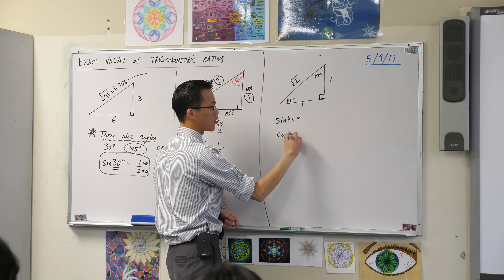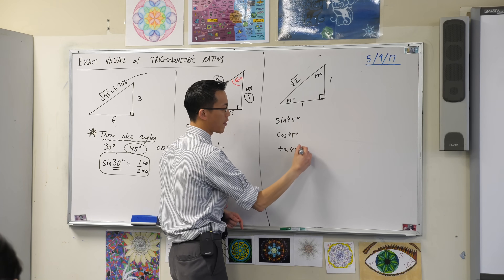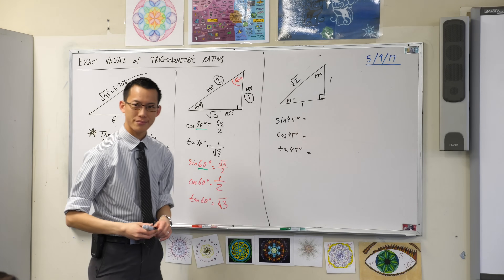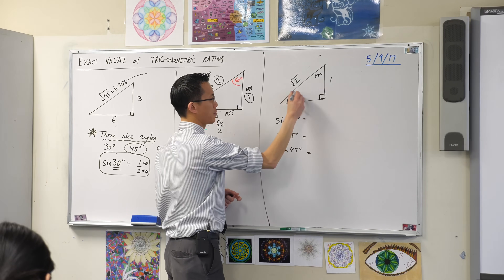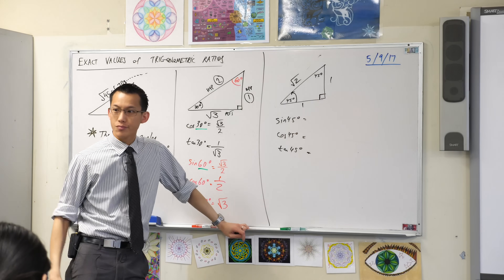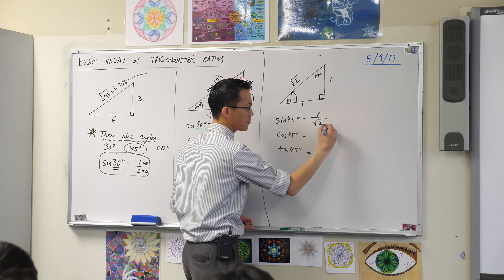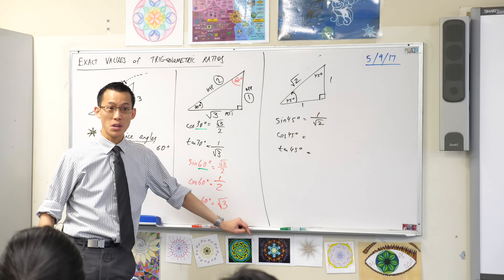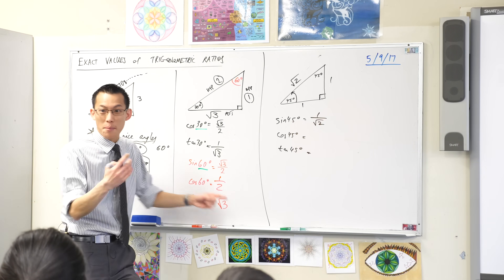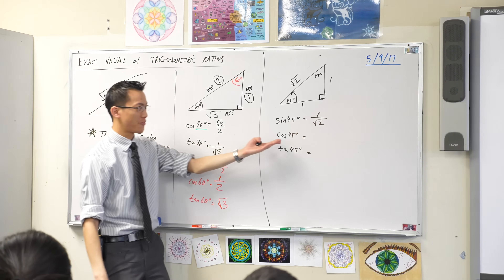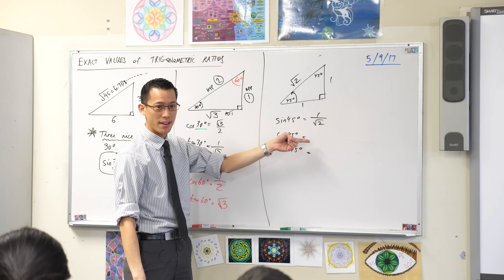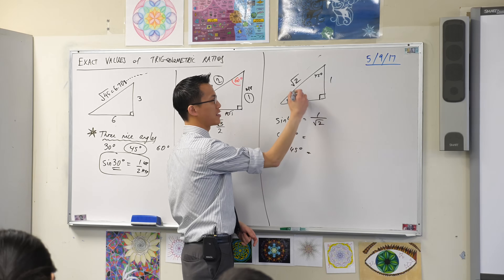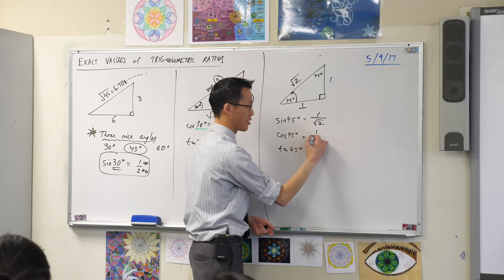From here we can work out sine 45, cos 45, and tan 45 in just the same way. Sine 45 — let's use this 45. What's opposite on hypotenuse this time? One on root two. Now we can go to cos 45 and do adjacent on hypotenuse, but we don't even need to. Because remember — 45 is its own complement, so sine 45 is the same as cos 45. You can confirm it: adjacent on hypotenuse is still one on root two. So it's the same deal.